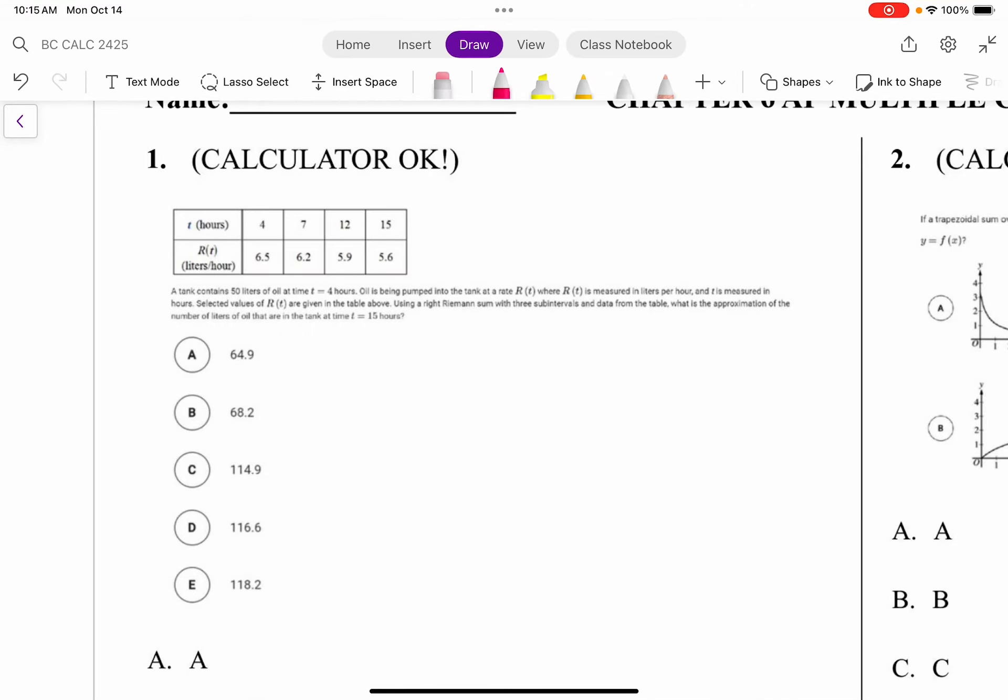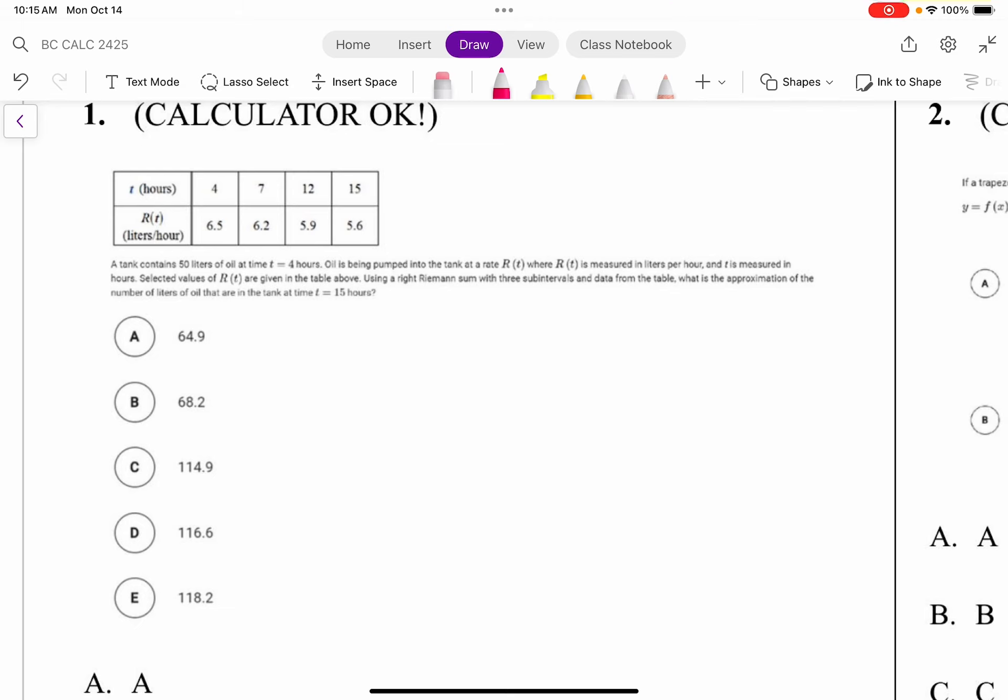Okay, so this problem says a tank contains 50 liters of oil at time t equals 4 hours. Oil is being pumped into the tank at a rate r(t), where r(t) is measured in liters per hour and t is measured in hours. Selected values of r(t) are given in the table.